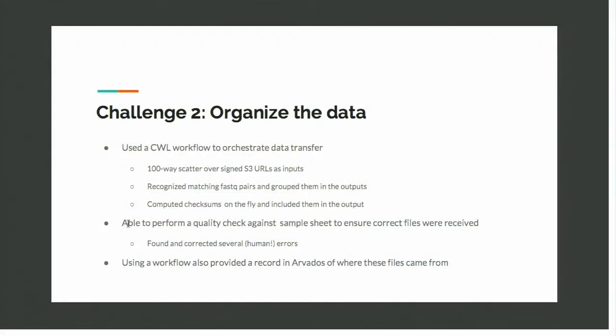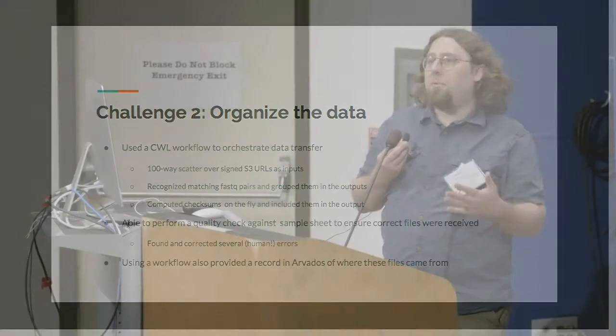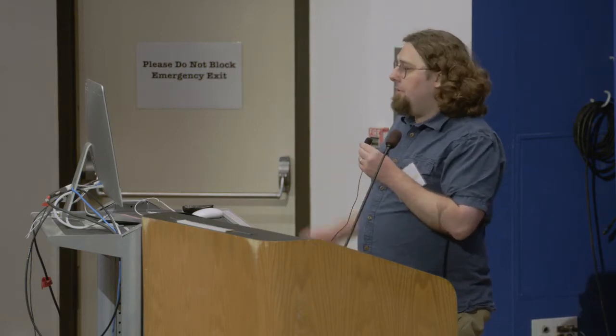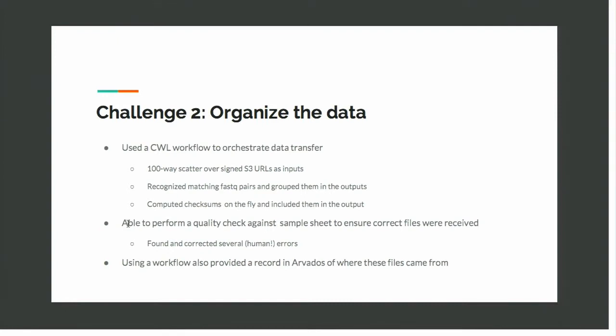You're grabbing all this data and you need to make sure you organize it, because if you end up with a ton of files you're not sure what to do with them. We wrote this as a CWL workflow, expressed as a scatter over 100 files at a time. The inputs are the source URLs. We could recognize FASTQ pairs, make sure they got grouped into separate output collections, and compute checksums on the fly — which was really important for quality checking, because the customer who provided the data gave a sample sheet with file names, URLs, and checksums, and it turned out there were several human errors, so we could identify those and verify we got all the data we were supposed to. Using a workflow for basic data transfer tasks is a good idea because it gives you more information about where files came into the system.